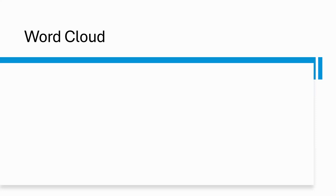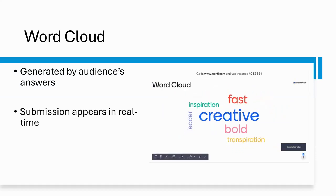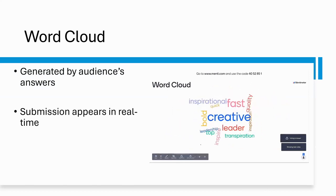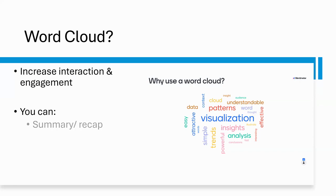The first one I'm going to introduce is Word Cloud. It's one of Mentimeter's most popular slides. It's a great way to break the ice at the beginning of class, spark conversations, and get an unbiased representation. Essentially, a word cloud is generated from audience answers. All you need to do is enter the question and let your audience submit their answers. All submissions appear in real time in a variety of colors, and the more popular the submissions, the bigger the words stand out. Using a word cloud in a live setting increases teacher-student interaction and engagement. You can use it to summarize, recap, check understanding, and find out how people feel.